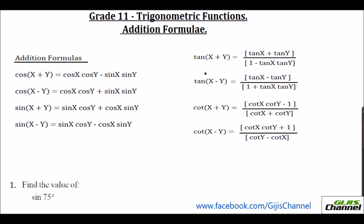And you have tan(x + y) which is equal to (tan x + tan y) divided by (1 − tan x tan y). When it is tan(x − y), it is the same formula except the sign changes. So here it is (tan x − tan y) over (1 + tan x tan y). And for cot(x + y): since cot is the reciprocal of tan, cot(x + y) equals (cot x cot y − 1) over (cot x + cot y).